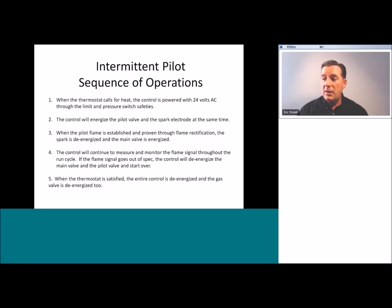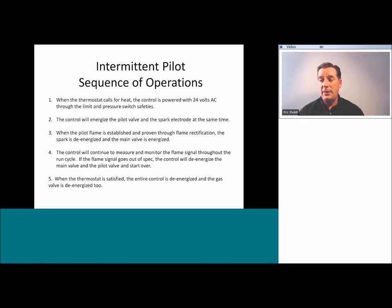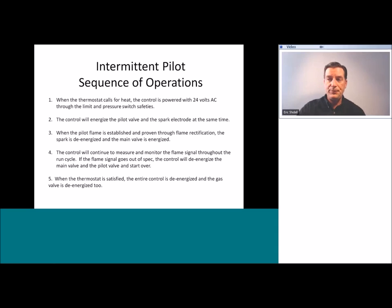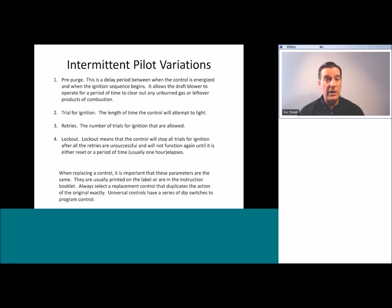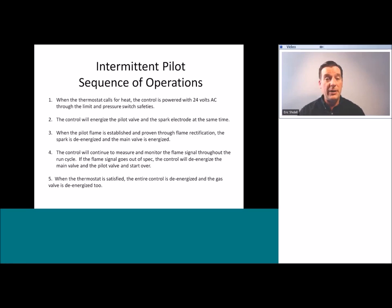Here is the basic sequence of operations for an intermittent pilot control: when the thermostat calls for heat, the control is powered with 24 volts AC through the limit and pressure switch safeties. The control energizes the pilot valve and spark electrode simultaneously. When the pilot flame is established and proven through flame rectification, the spark is de-energized and the main valve is energized. The control continues to measure and monitor the flame signal throughout the run cycle. If the flame signal goes out of specification, it de-energizes the main valve and pilot valve and starts over. When the thermostat is satisfied, the entire control is de-energized and therefore the gas valve is de-energized also.